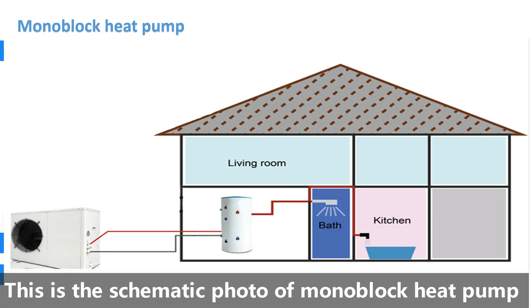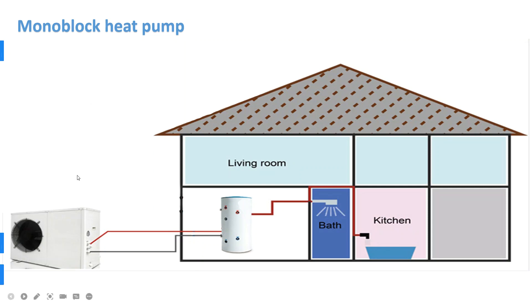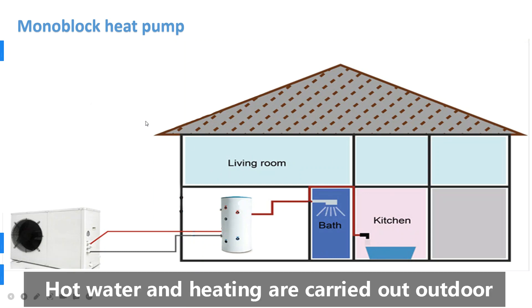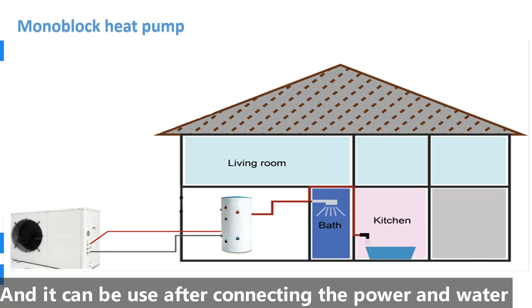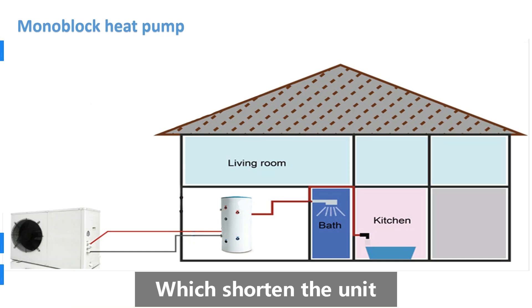This is the schematic photo of a monoblock heat pump. The main unit, hot water, and heating are carried out outdoor. This reduces the amount of installation, and it can be used after connecting the power and water, which shortens installation time.